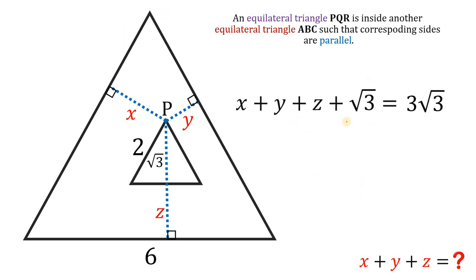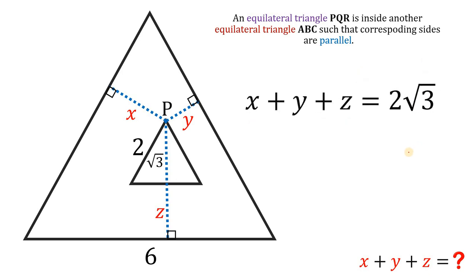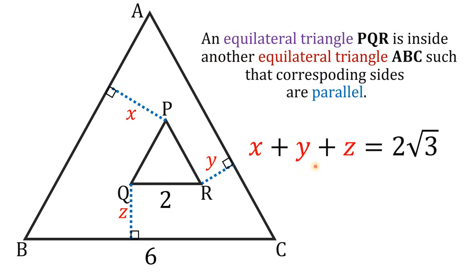So our equation now becomes X plus Y plus Z plus square root of 3 equals 3 square root of 3. What we're going to do is subtract square root of 3 from both sides. The square root of 3 and negative square root of 3 cancel out, and 3 square root of 3 minus square root of 3 gives us 2 square root of 3. And that is the value of X plus Y plus Z. Therefore, the sum of X plus Y plus Z must be 2 square root of 3 units. And as always, we are done.